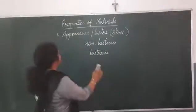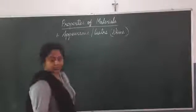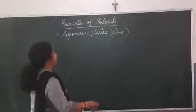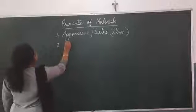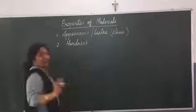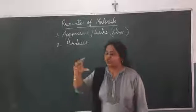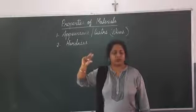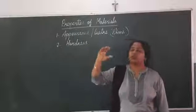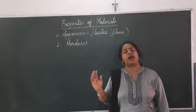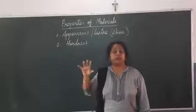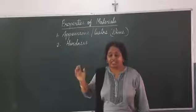Then we will move on to the next property of materials: hardness. The second property is hardness. Hardness means the objects which you cannot compress. The objects which you cannot compress are hard objects — like your table and your chairs. You cannot compress them; they are very, very hard.